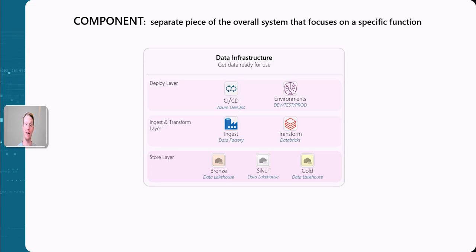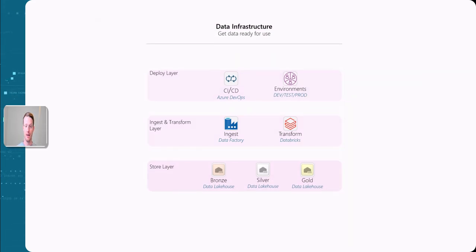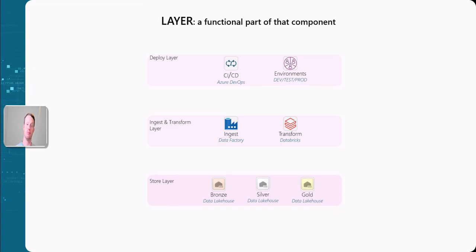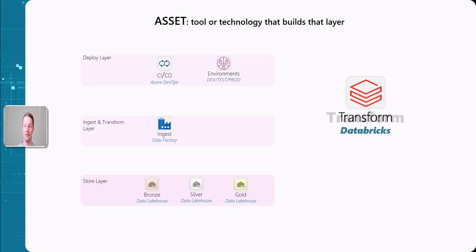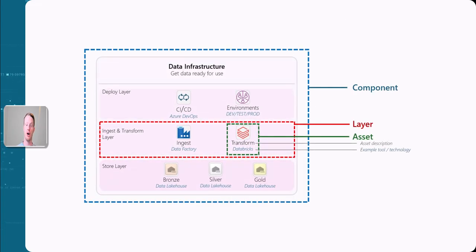Within each component, one component is a separate piece of the overall system that focuses on a specific function. For example, this component is called the data infrastructure, and the idea is to get our data ready for use. Within that we have multiple layers — a layer is a functional part of that component. Within the data infrastructure we have the storage layer, the ingest layer, transform layer, and the deploy layer. Within layers we have assets — a tool or technology that builds a layer.